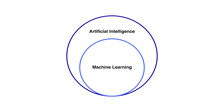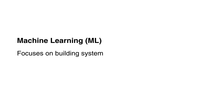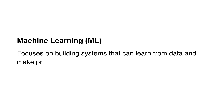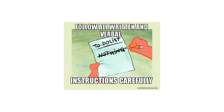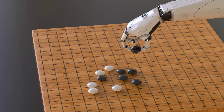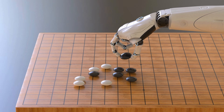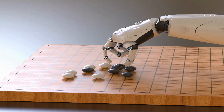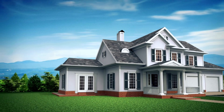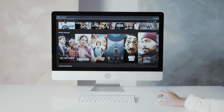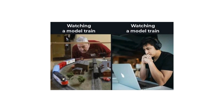Machine learning is a subset of AI. It focuses on building systems that can learn from data and make predictions or decisions without being explicitly programmed. Instead of telling a program what to do step by step, we give it data and it finds patterns to guide its predictions. For example, instead of coding rules to detect spam emails, predict house prices, or recommend movies, we train a model on historical data and it learns to make future predictions.